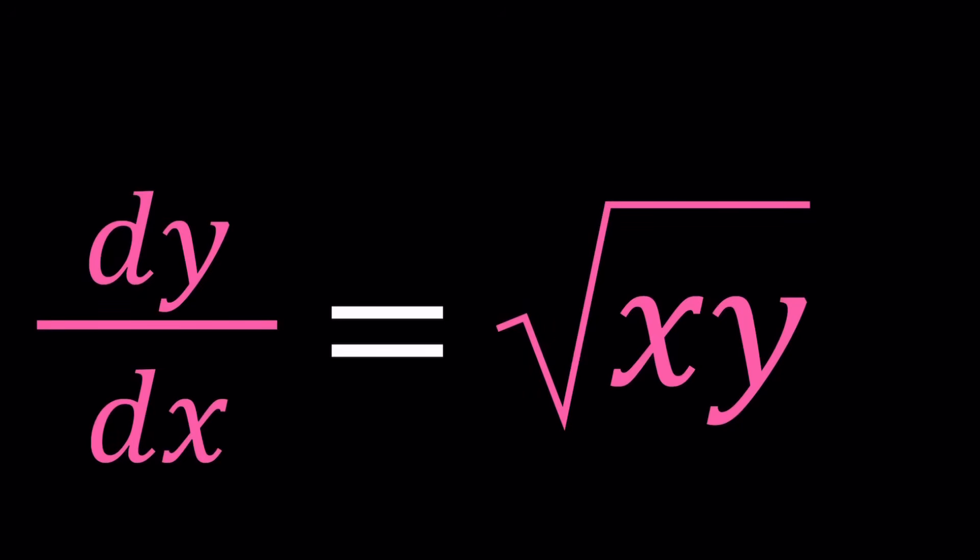Hello everyone, in this video we're going to be solving a differential equation. We have dy over dx equals the square root of xy. So we're looking for a function y of x such that when we differentiate we get the product of the square root of x and y, or the square root of the product, which is the same thing.